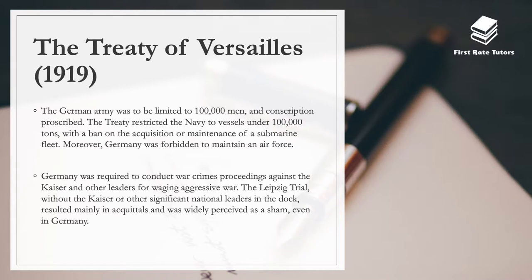The treaty also restricted the German navy to vessels under 100,000 tons, with a ban on acquiring or maintaining a submarine fleet, and Germany was forbidden to have any air force. Germany was also required to conduct war crimes proceedings against the Kaiser — who had abdicated in 1918 — and other leaders for waging aggressive war. The Leipzig trials, held without the Kaiser or other significant national leaders, resulted mainly in acquittals and were widely perceived as a sham, even within Germany.